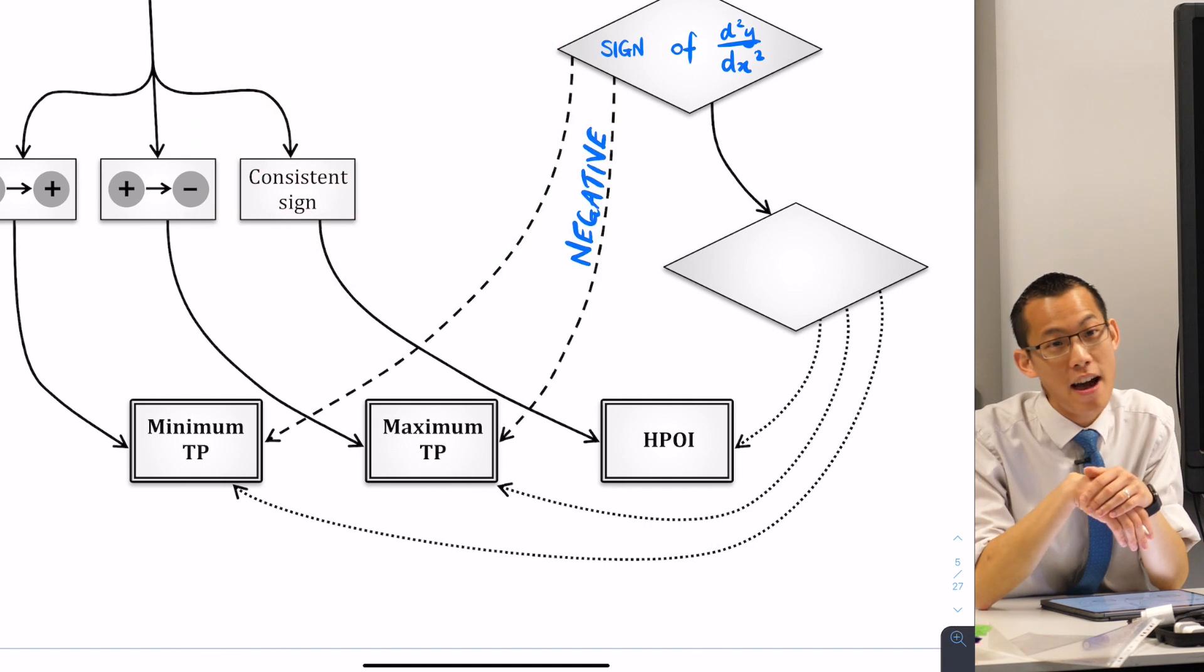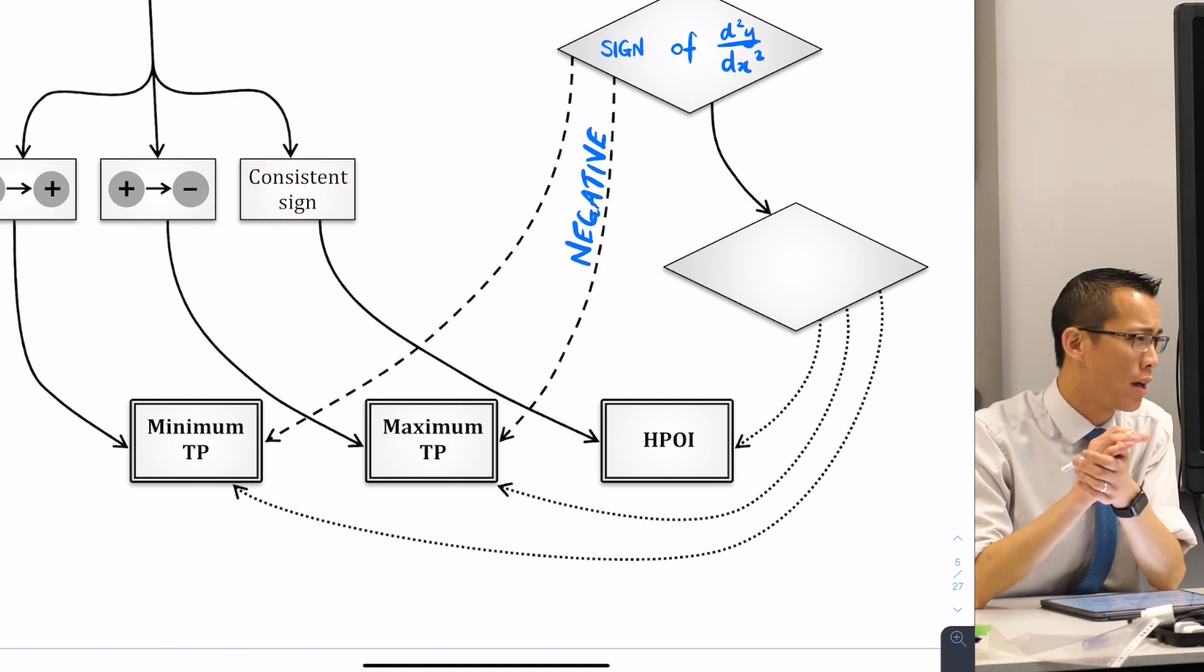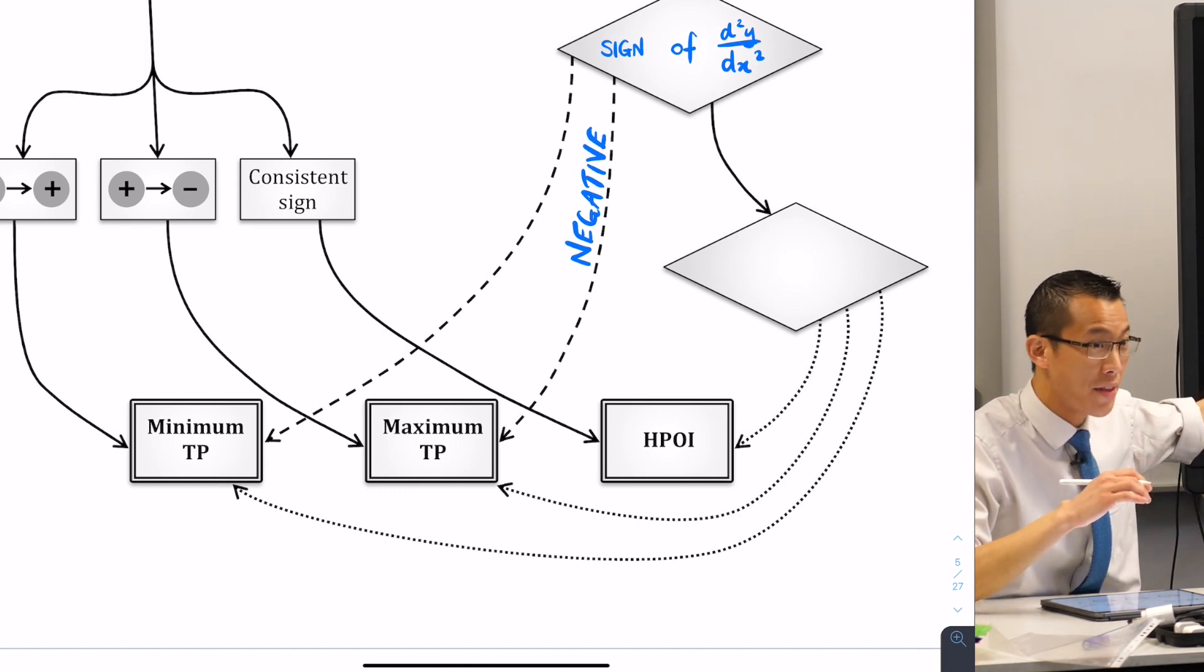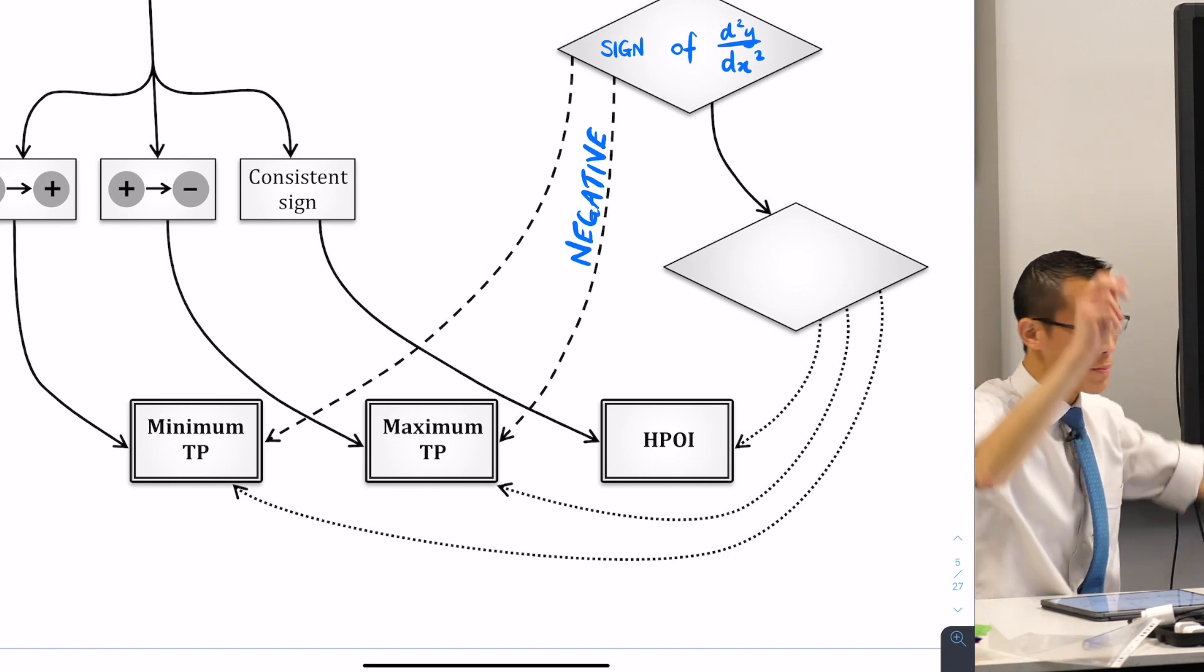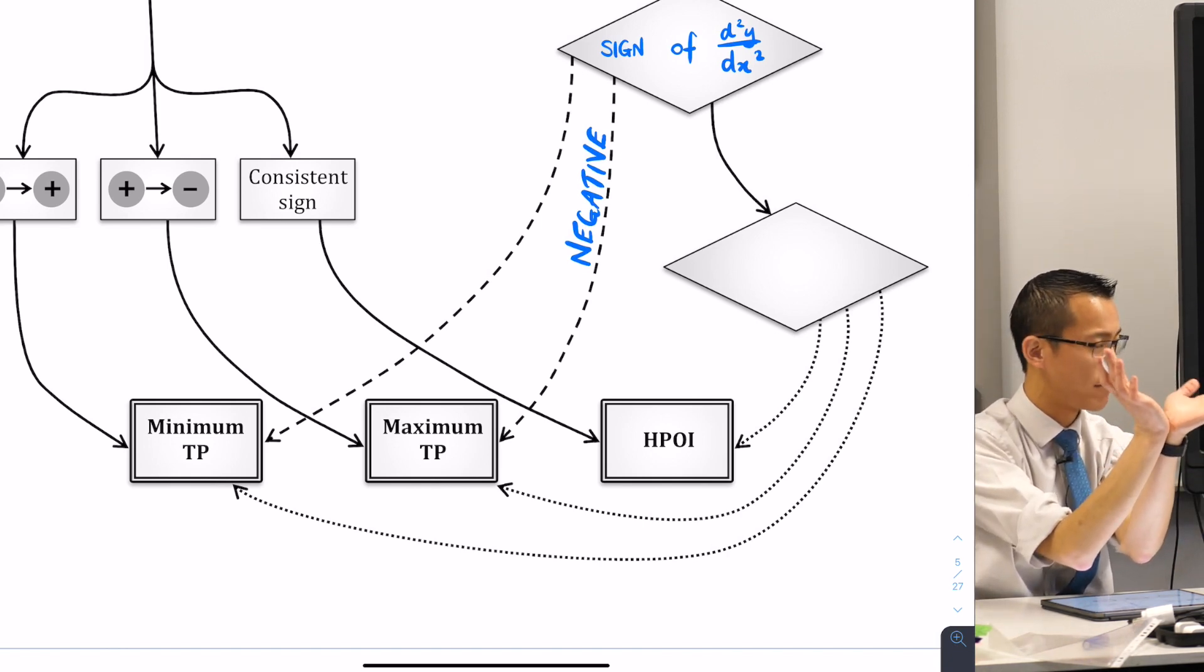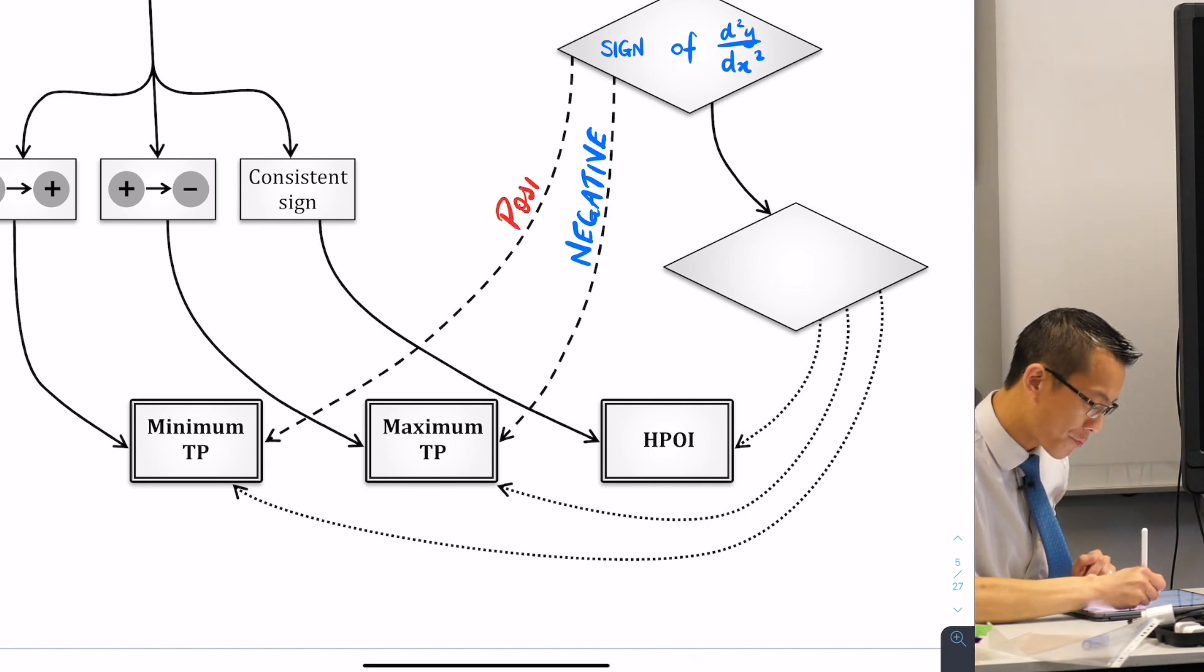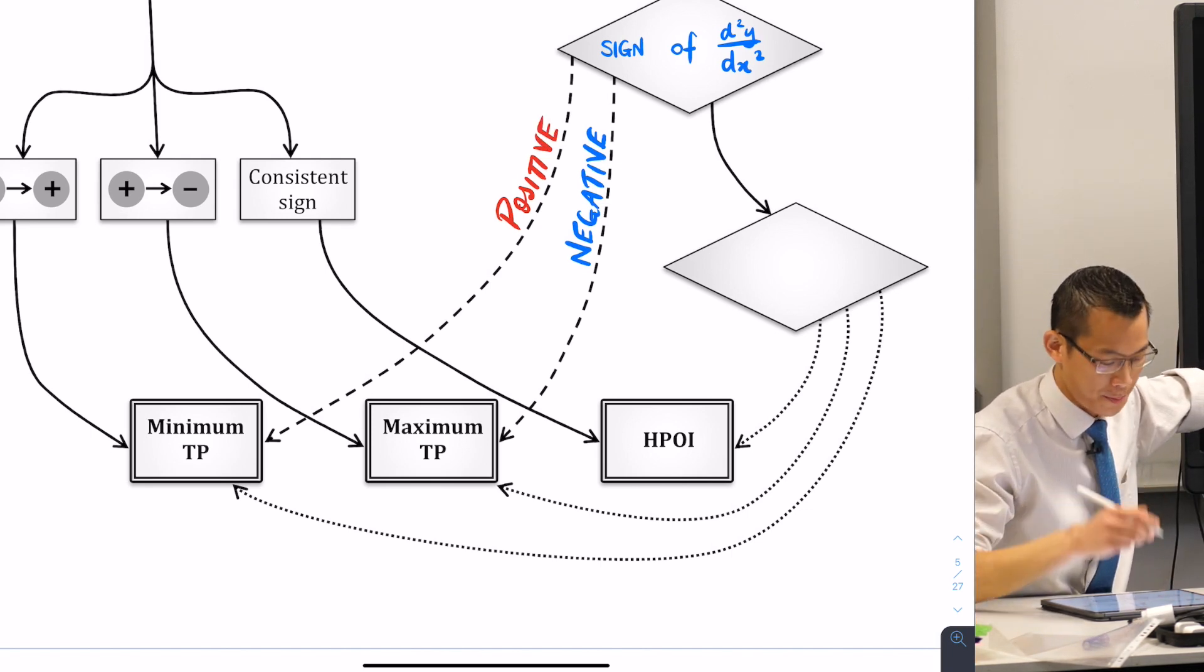By contrast, if I find out that the second derivative has a positive value, like say it's one, what kind of stationary point is that? It's going to be a minimum, right? Because it's concave up, which means that you're at the bottom of that function. Does that make sense? Concave up, so that's a minimum. So a positive second derivative tells you you have a minimum over here.